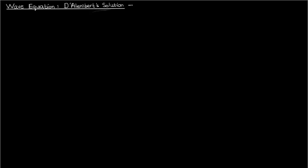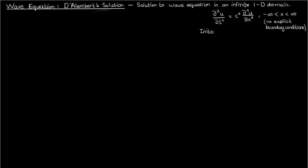Anyway, D'Alembert's solution is a solution to a wave equation problem in an infinite one-dimensional domain. In other words, x varies from negative infinity to positive infinity. Now, because we have an infinite spatial domain, there won't really be any explicitly specified boundary conditions. However, we will still have two initial conditions because of the two derivatives in time.